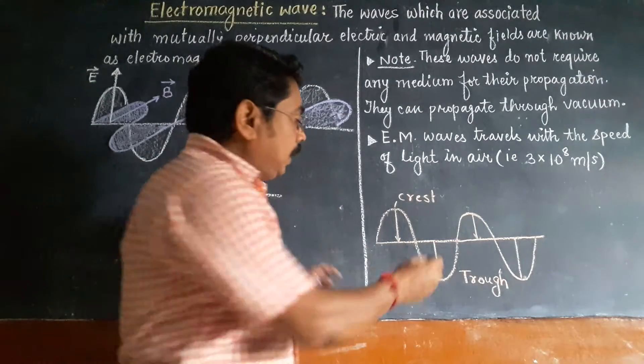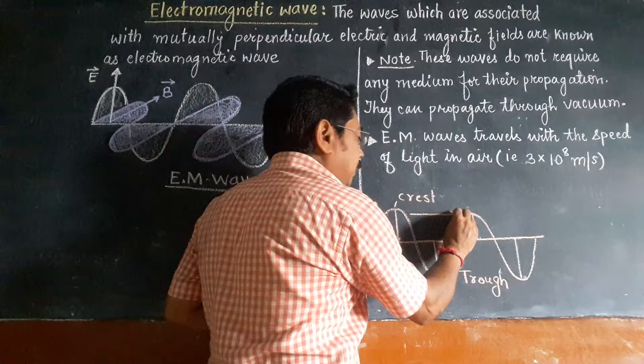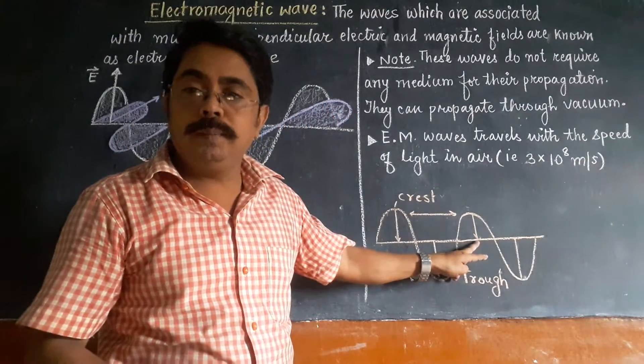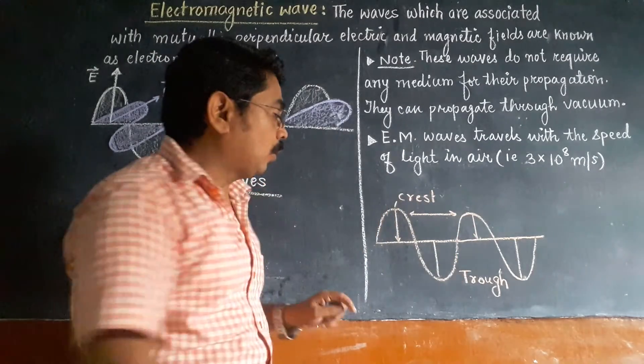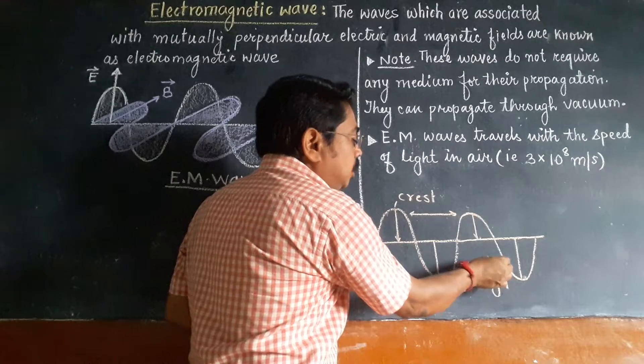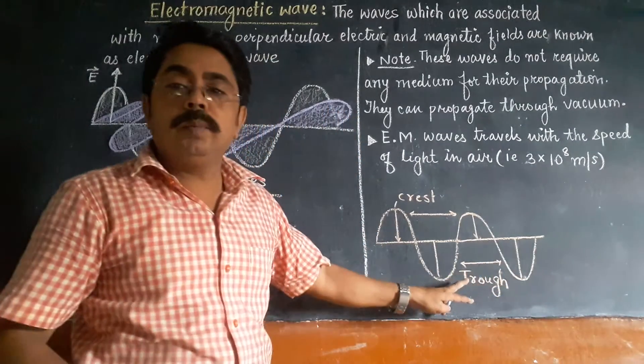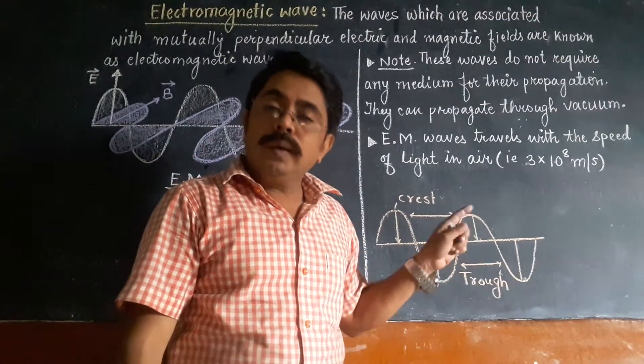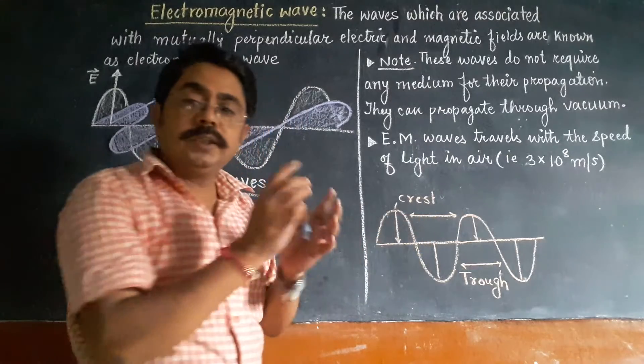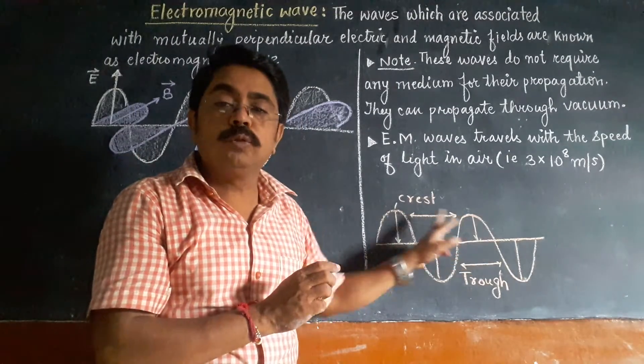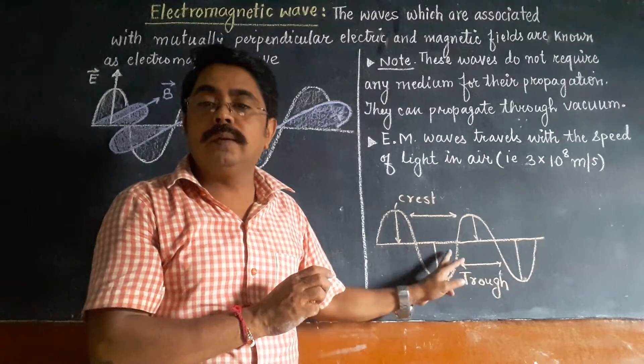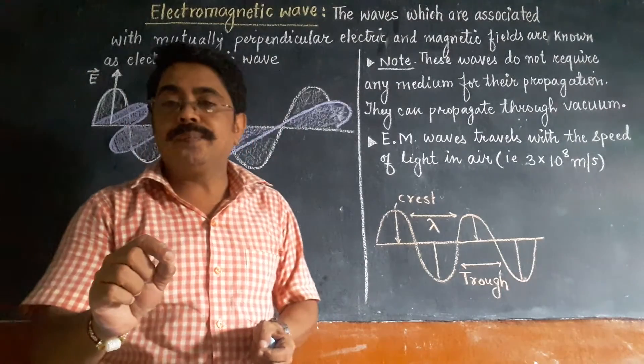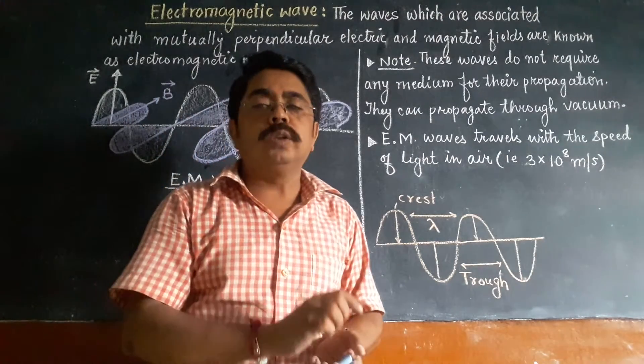Whereas the depressions are called troughs. So distance between these two crests, distance between any two consecutive crests. These are the consecutive crests.